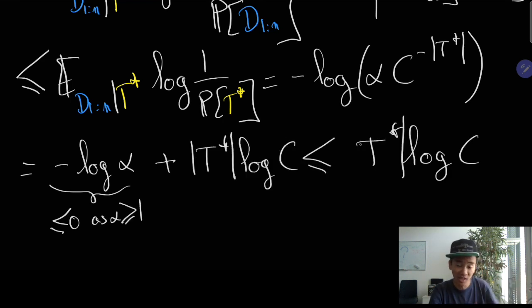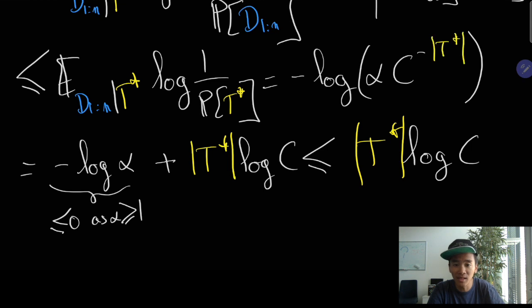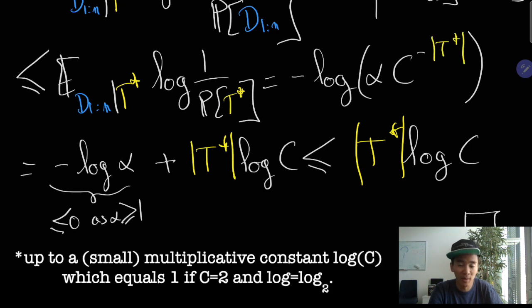Now if we consider the prior that we considered initially, we can see that this is at most the length of the description of T star, which is itself at most the so-called Kolmogorov complexity of T star, which is the shortest possible description of T star.